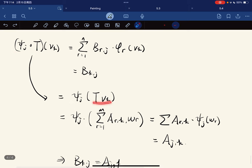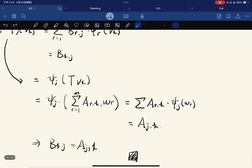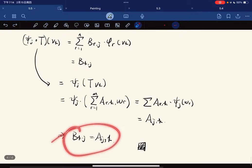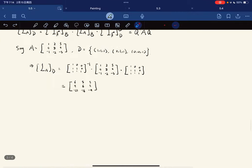But this also equals this, where [Tv_k]_C equals this. Now we use the linearity of φ and the definition, which gives you a_{jk}. So we see that b_{kj} equals a_{jk}.